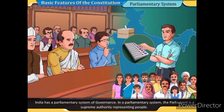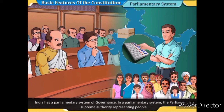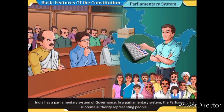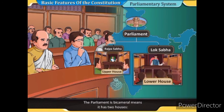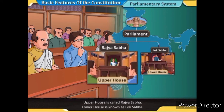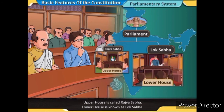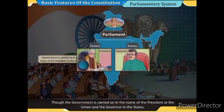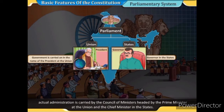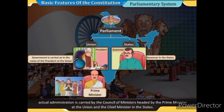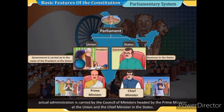India has a parliamentary system of governance in which parliament is the supreme authority representing people. The legislature at the union is the parliament, which is bicameral — having two houses. The upper house is called the Rajya Sabha and the lower house is known as the Lok Sabha. Though governance is carried on in the name of the President at the union and the Governor in the states, actual administration is carried by the council of ministers headed by the Prime Minister and the Chief Minister in states.